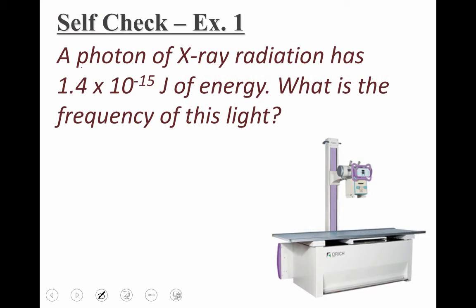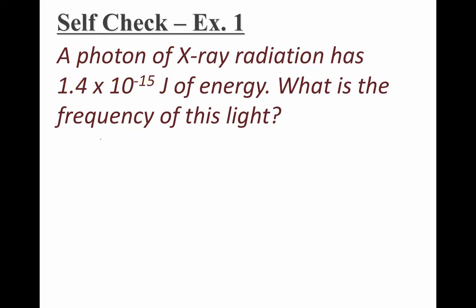Let's try an example calculation. This calculation is for x-ray radiation, which is considered relatively high energy radiation. You look at this number — 1.4 times 10 to the minus 15th — and you think that doesn't look like high energy, but that's the energy for one single photon. We're going to calculate the frequency of that light using the equation: energy equals Planck's constant times the frequency.